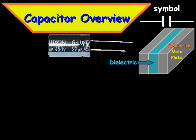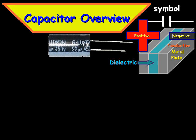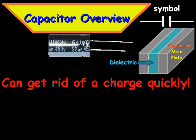Basically when there's a difference in voltage across the two conductors, a static electric field develops across the dielectric, causing a positive charge to collect on one plate and a negative charge on the other, and the energy is stored in an electrostatic field. The difference between a capacitor and a battery is that a capacitor can release that energy instantaneously, which can make it very dangerous if you handle a loaded one — you can get instantly shocked.